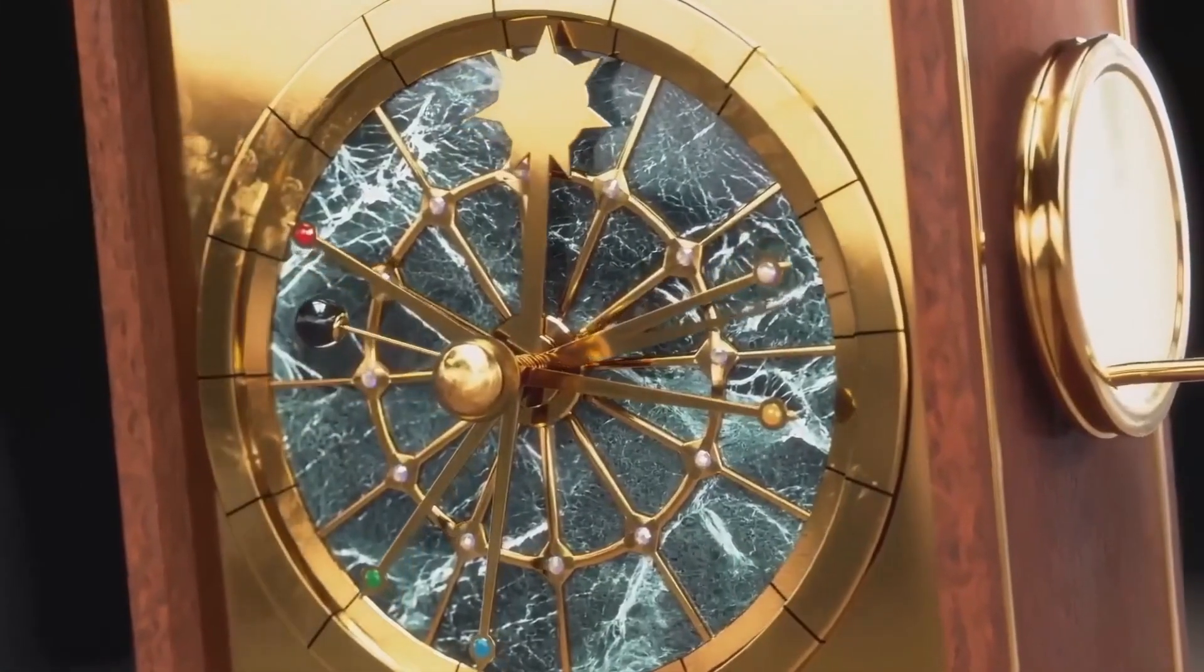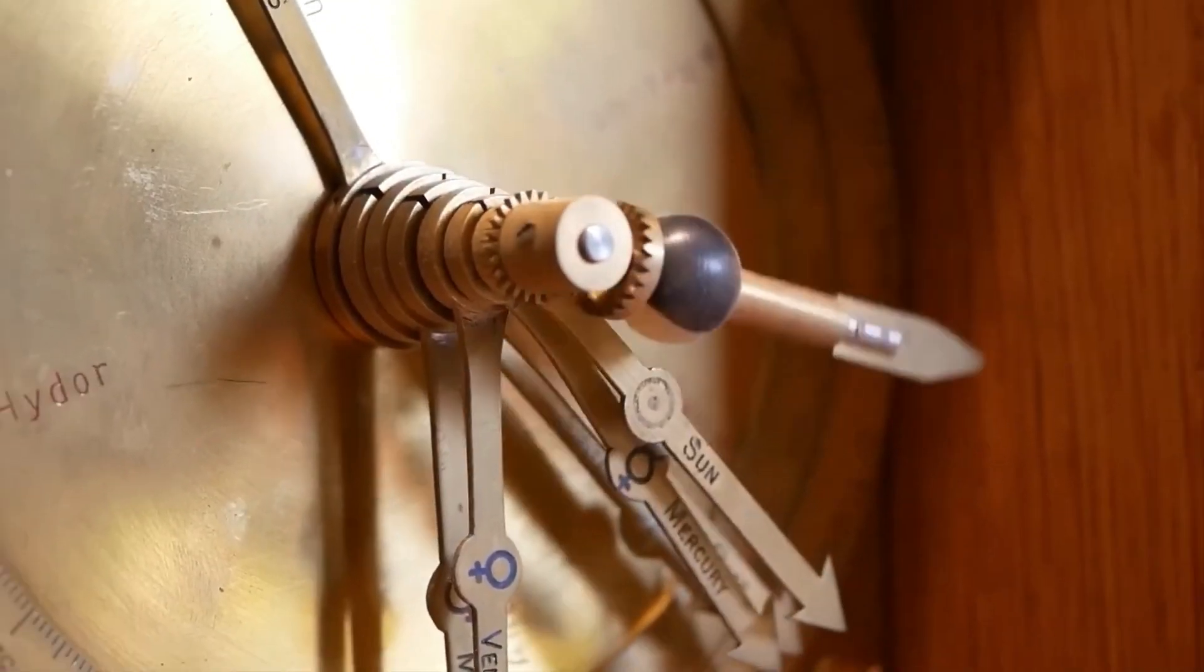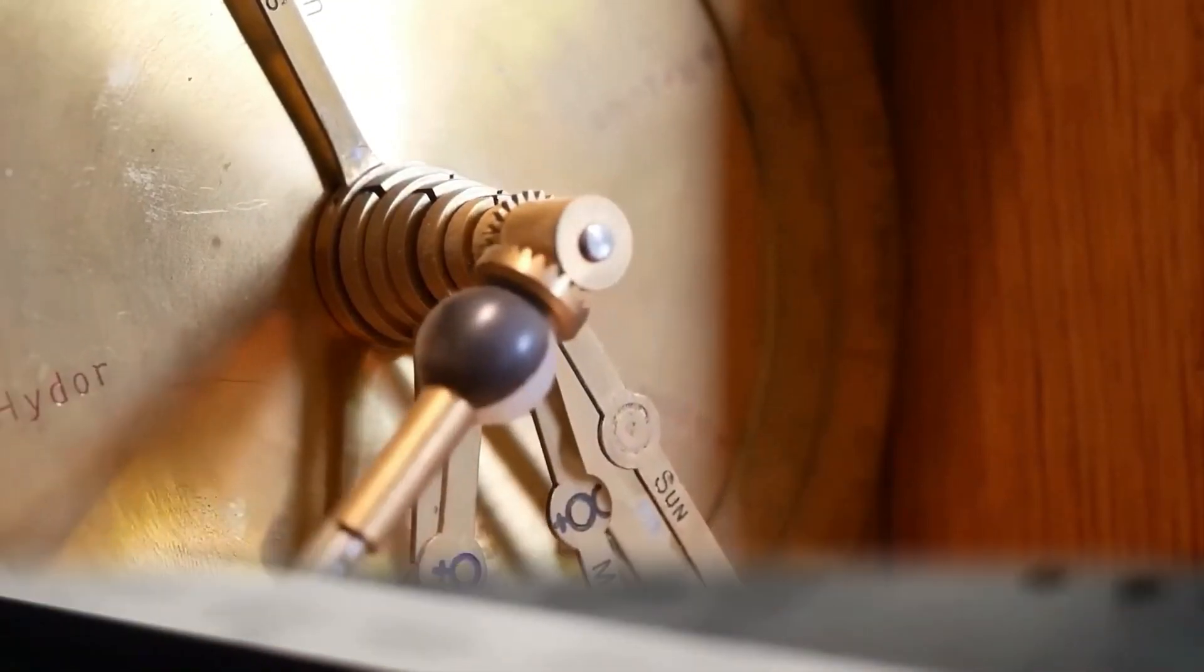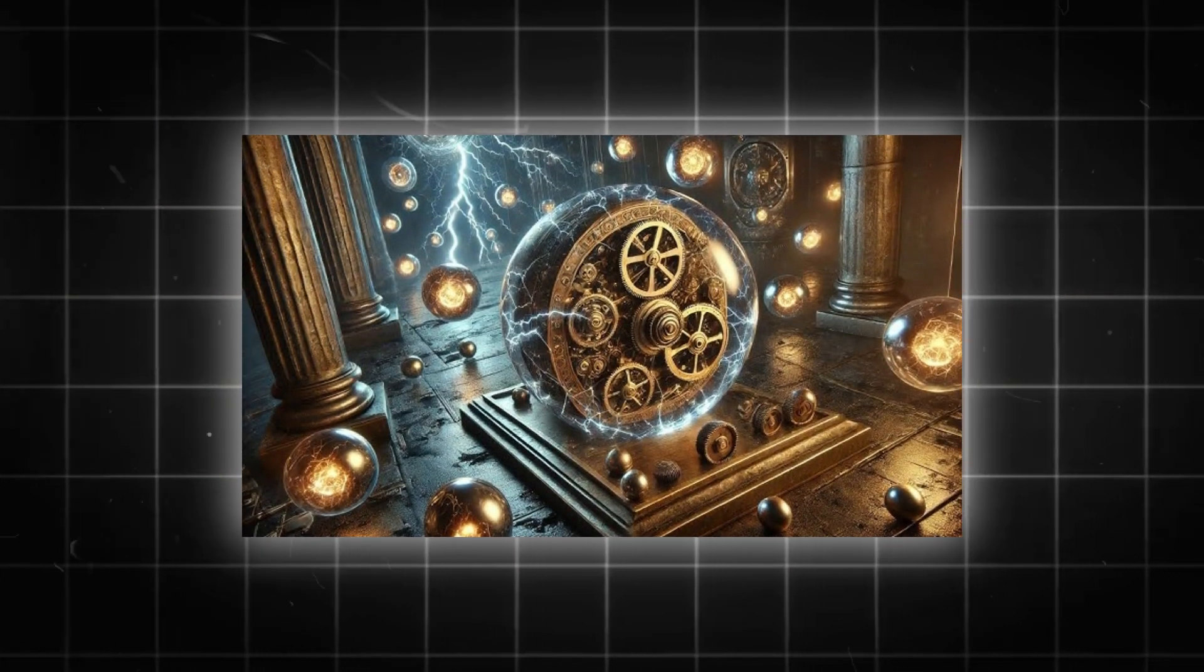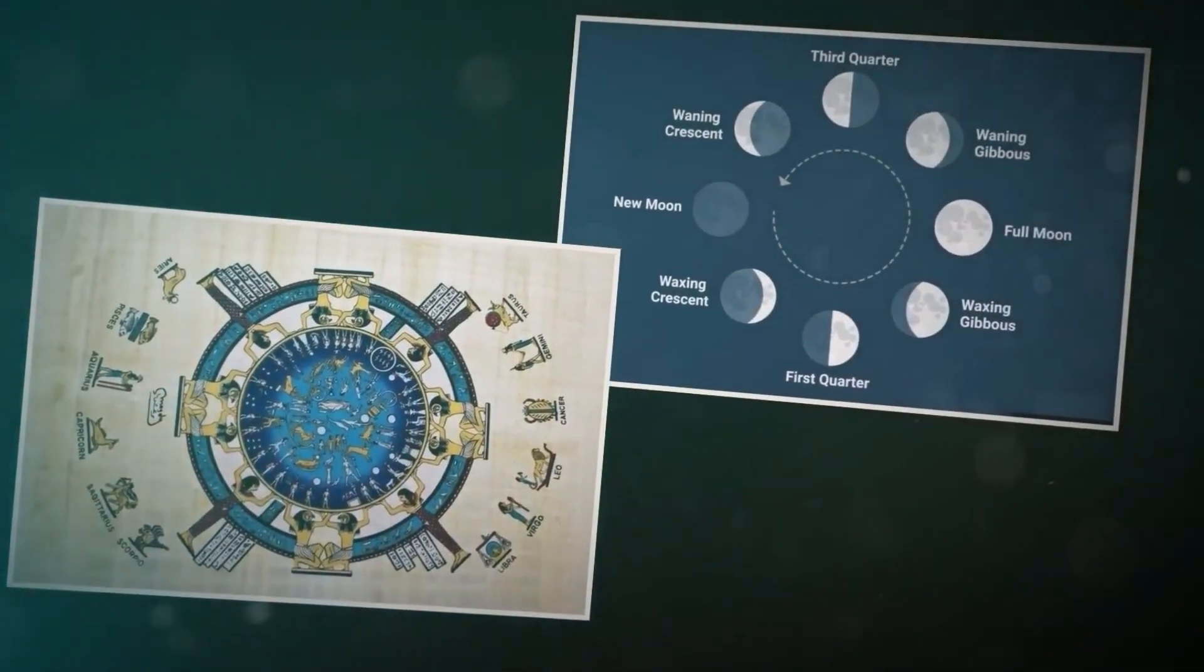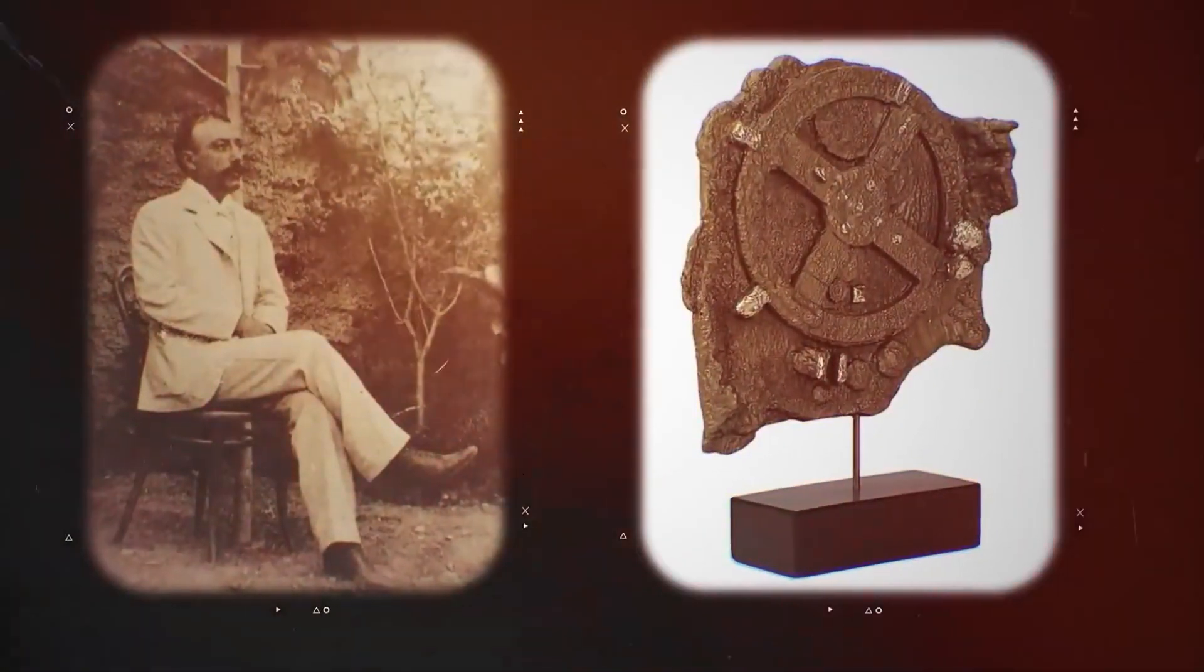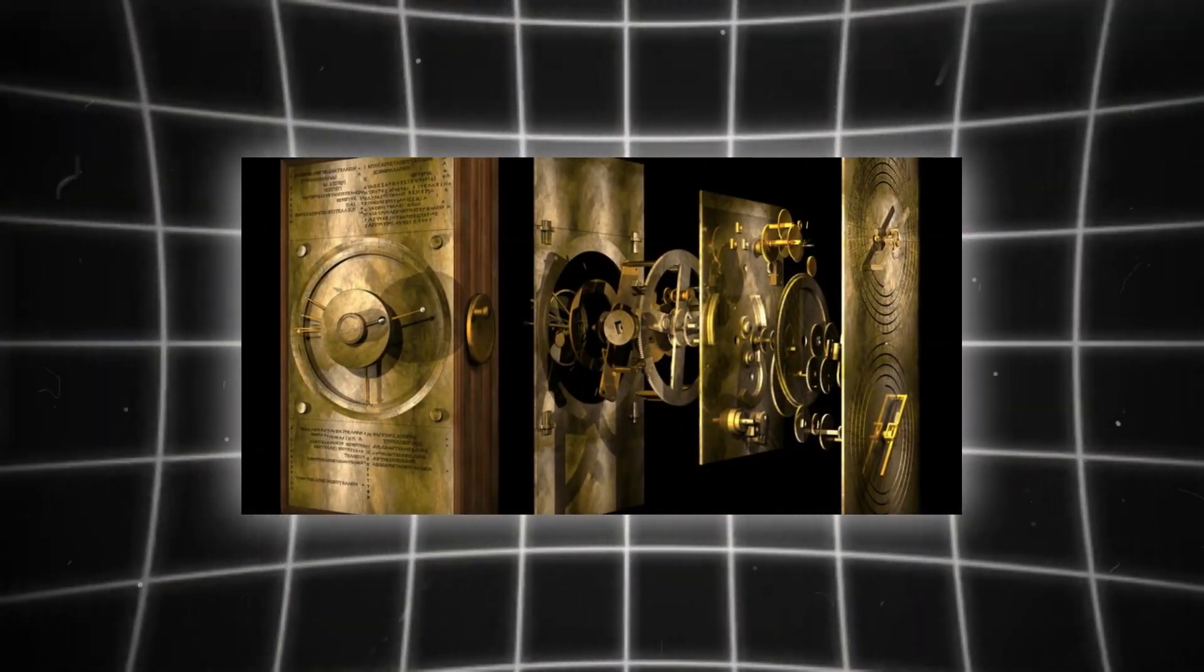The shipwreck's location offers clues to the mechanism's fate. In 2012 and 2015, divers returned to the site, finding a bronze disc with a bull image, hinting at more artifacts. The ship, carrying 300 tons of cargo, likely sank in a storm, preserving the mechanism in the seabed's mud. This chance preservation contrasts with the loss of other potential devices, which may lie undiscovered underwater or misidentified in museum collections.